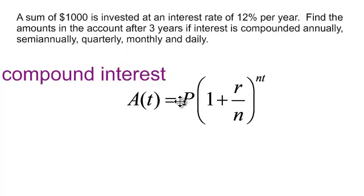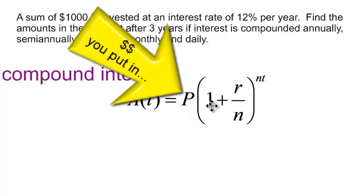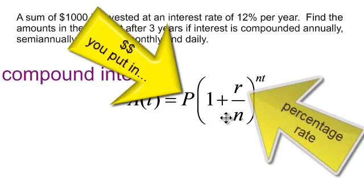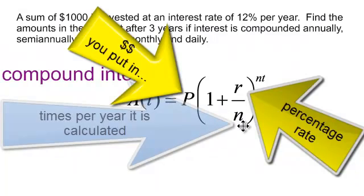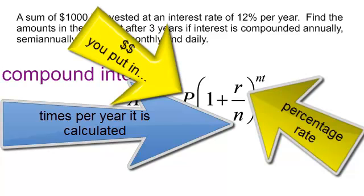The amount of money you're going to have after T years is equal to the principal times, in parenthesis, 1 plus the rate, the percentage of interest you're going to get, over N.